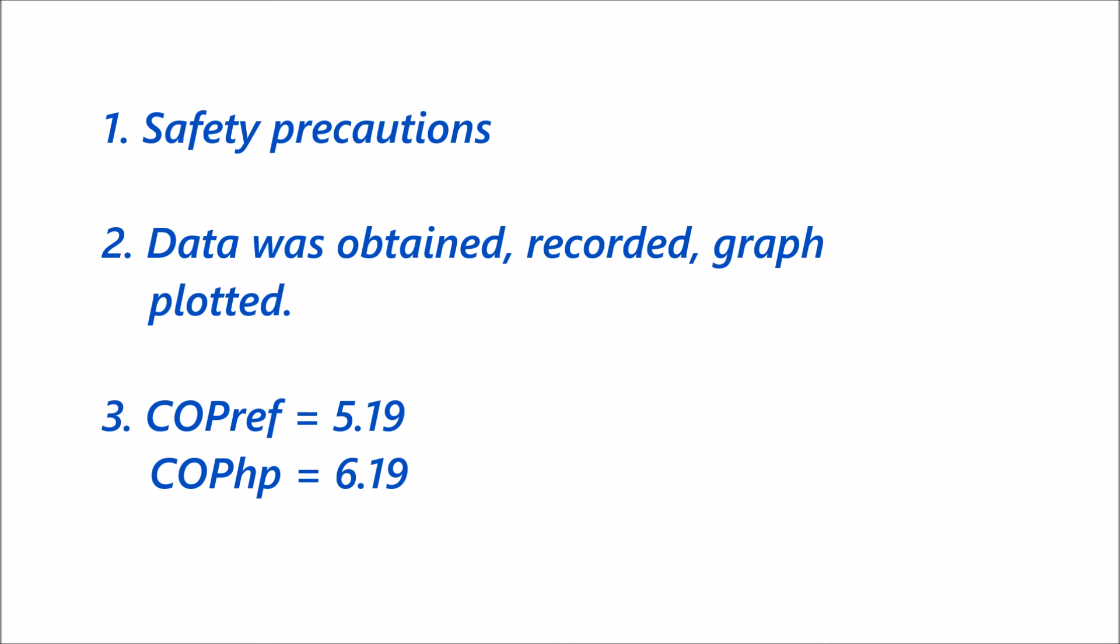The coefficient of performance for refrigerant and heat pump was calculated from the data. The coefficient of performance for the refrigerant is equal to 5.19, which means that 5.19 units of heat is removed per unit work done, and the coefficient for the heat pump is equal to 6.19. That is, 6.19 units of heat added per unit work done. Both coefficients are quite efficient because they can add or remove heat in a short time.